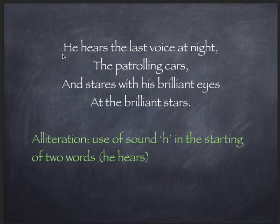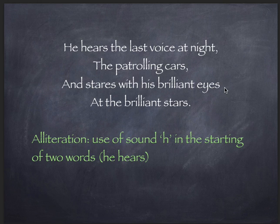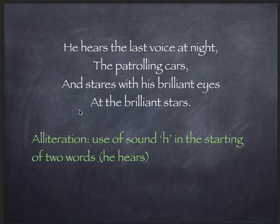The last stanza: 'He hears the last voice at night — the patrolling cars.' The last sound the tiger hears at the end of the day during nighttime is the sound of patrolling cars. 'And stares with his brilliant eyes at the brilliant stars.' He can do nothing except stare at the brilliant stars with his brilliant eyes. It is his fate — he cannot go out of the zoo, cannot go out from behind the bars, cannot return to the forest or his normal routine. The alliteration here is the sound 'H' repeated at the start of two words: 'he hears'.